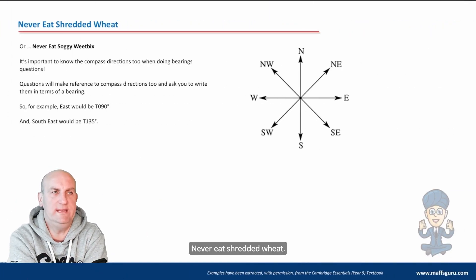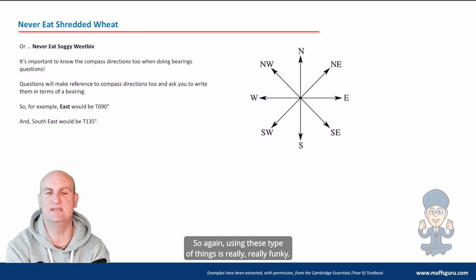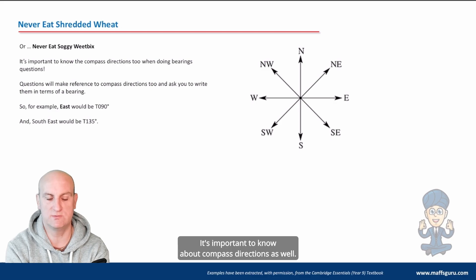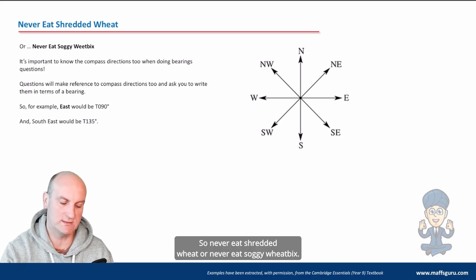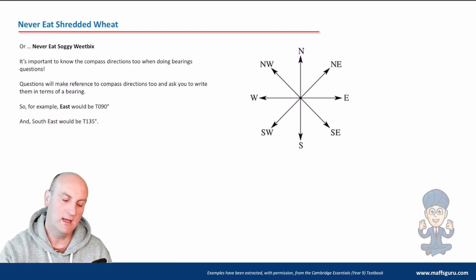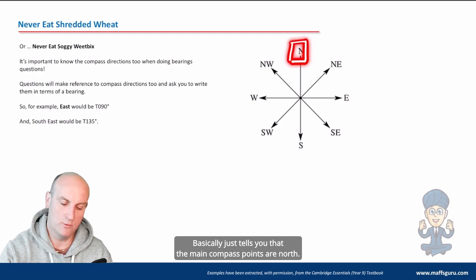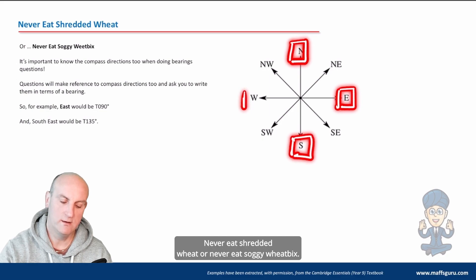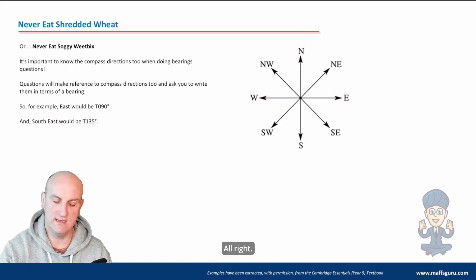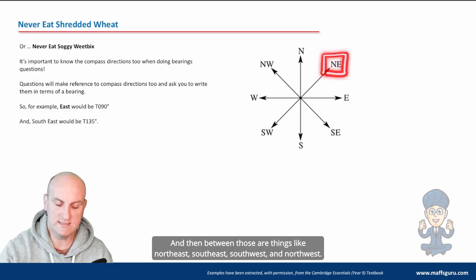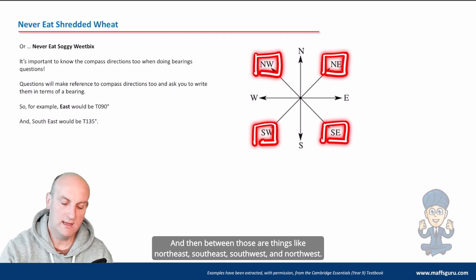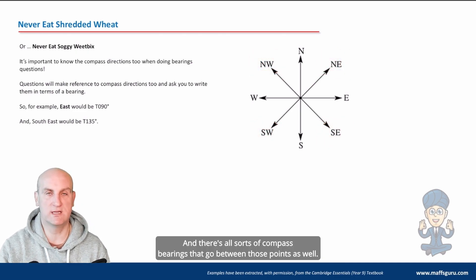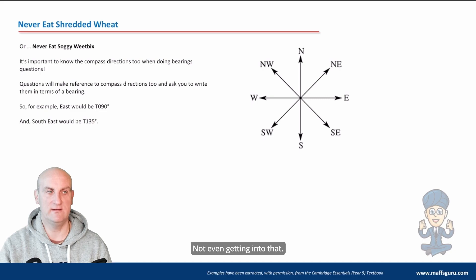Never eat shredded wheat. So again, using these types of things is really, really funky. It's important to know about compass directions as well. So never eat shredded wheat or never eat soggy weet bix. Basically just tells you that the main compass points are north, east, south, west. Never eat shredded wheat or never eat soggy weet bix. And then between those are things like northeast, southeast, southwest, and northwest. And there's all sorts of compass bearings that go between those points as well. Not even getting into that.